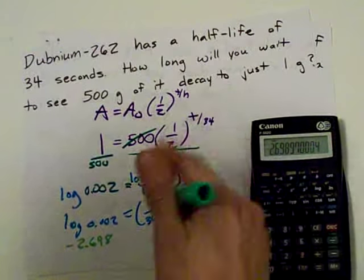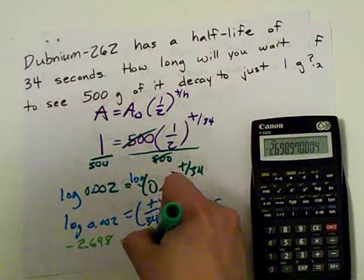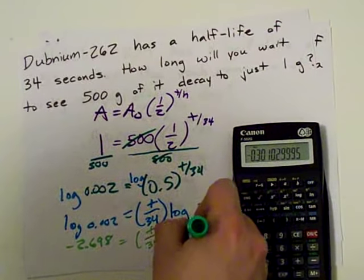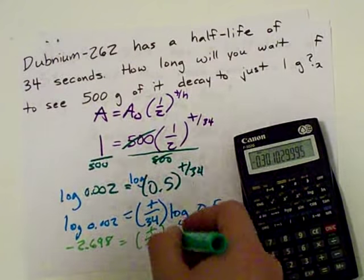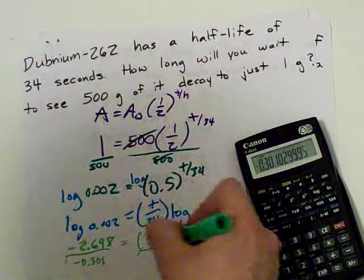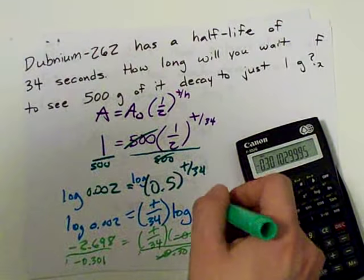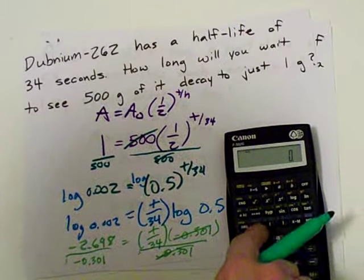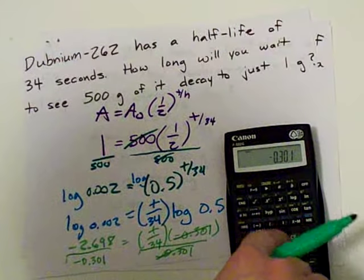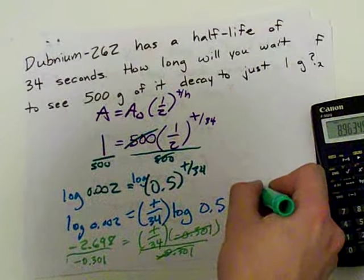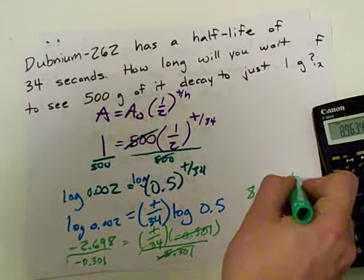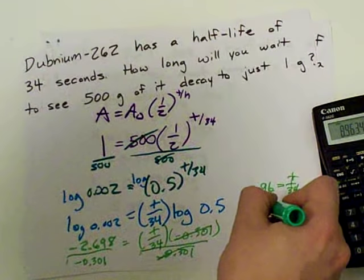What's the log of 0.5? Well, we'll do that on our calculator. We get 0.5, take the log of it, negative 0.301. Solve for t by dividing both sides by negative 0.301. These cancel each other out. You end up with 2.698 divided by 0.301, which gives me 8.96. And how do I undo division by 34? I multiply by 34.